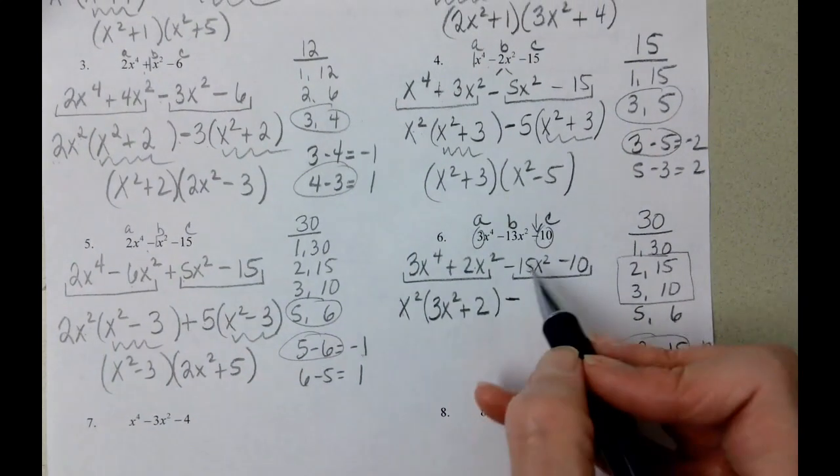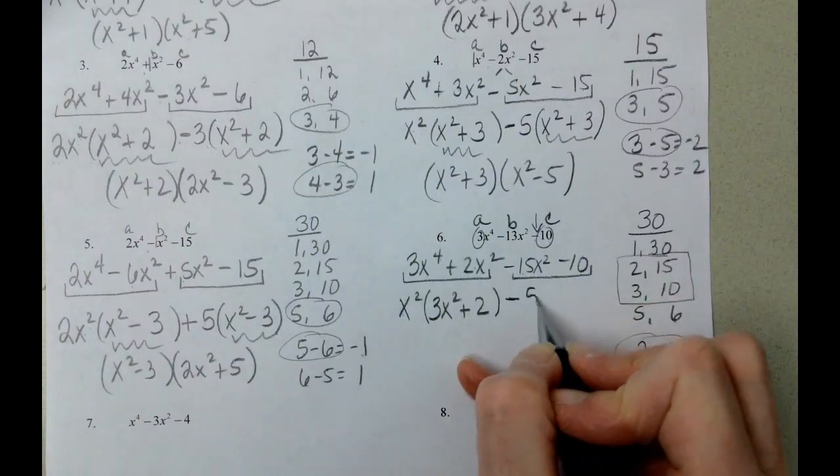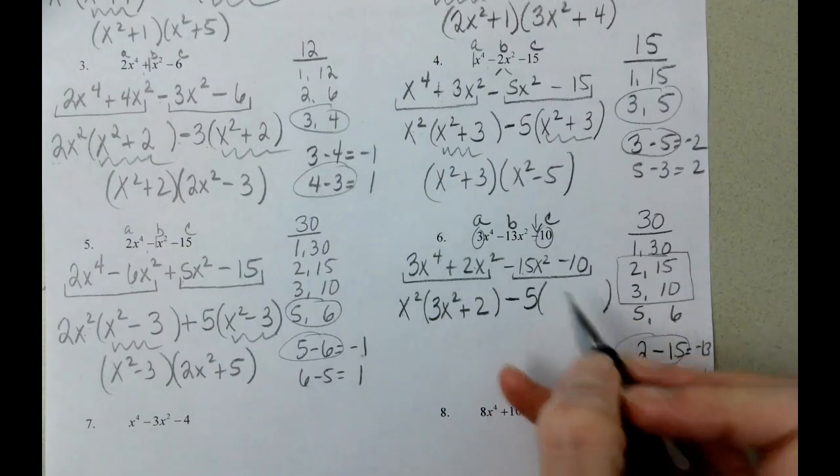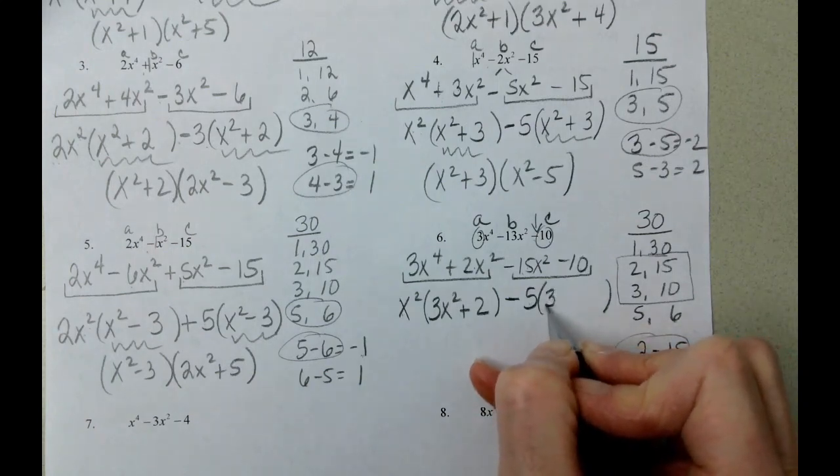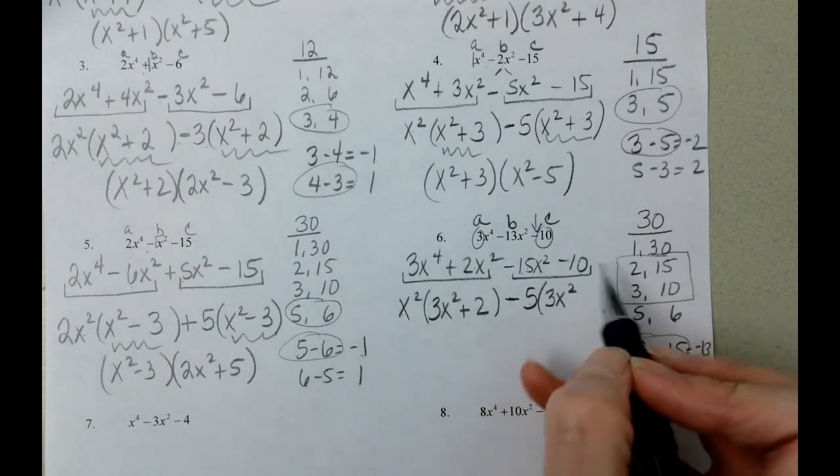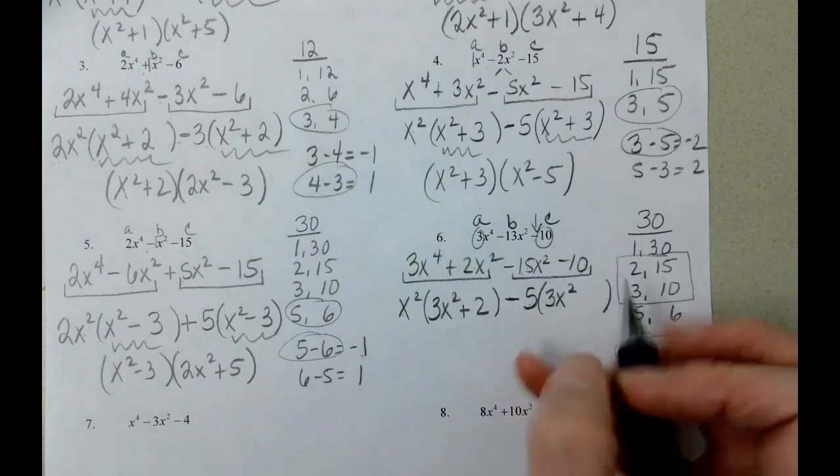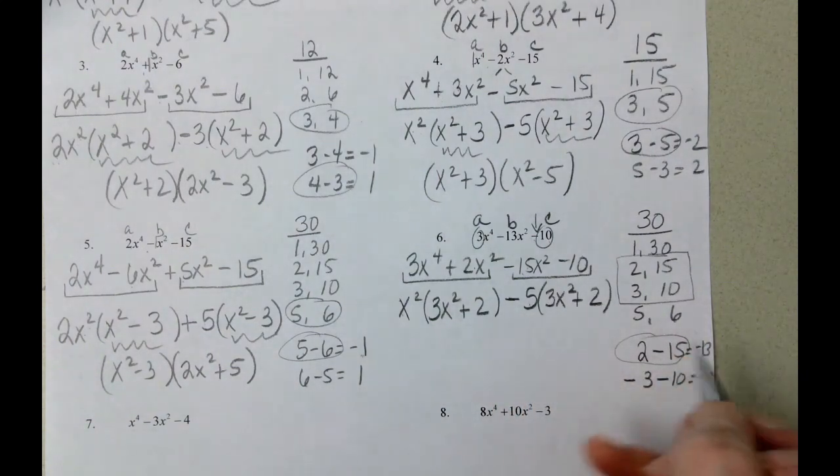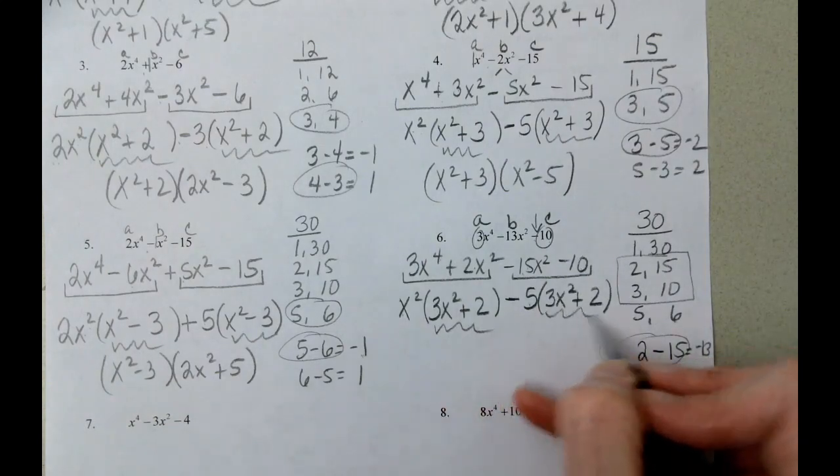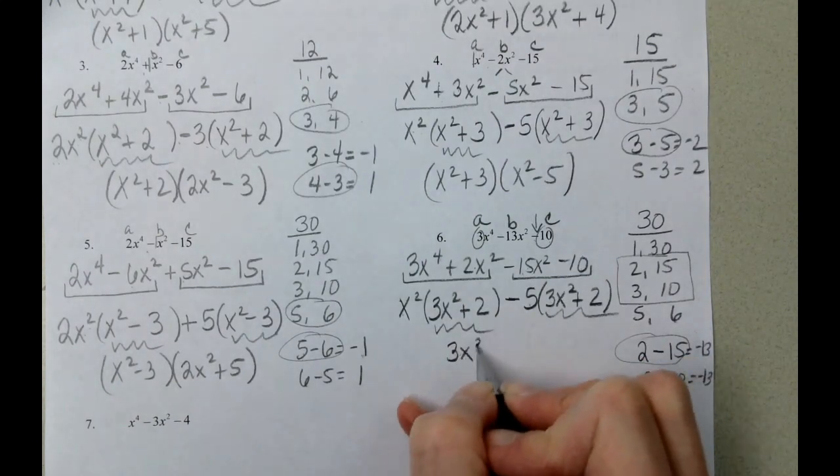The biggest number that divides into 15 and 10 is 5. Negative 15 divided by negative 5 is positive 3x squared. Negative 10 divided by negative 5 is positive 2. And then what we see is that we've got 3x squared plus 2.